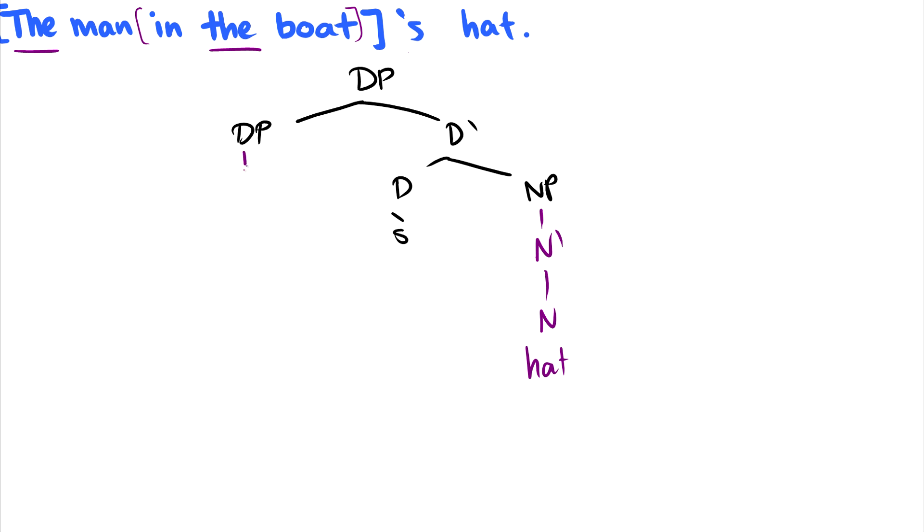Okay, so the man. Again, this is just determiner head with a NP complement. So the man in the boat. In the boat is an adjunct. Here's a description of the man. So let's not forget our bar levels here. We still have to do bar levels. And of course, this is the man here. And then in the boat, so in the boat. In is the head of the prepositional phrase. The boat.